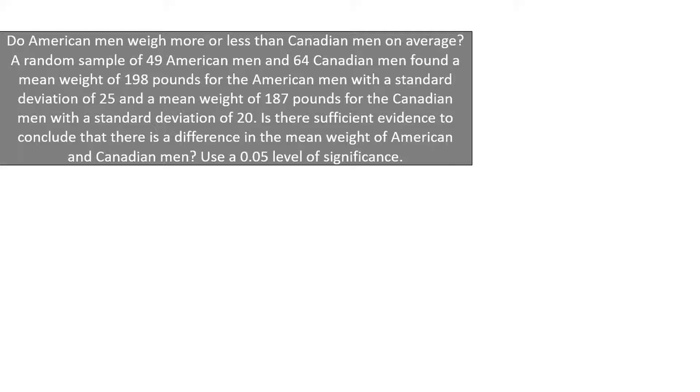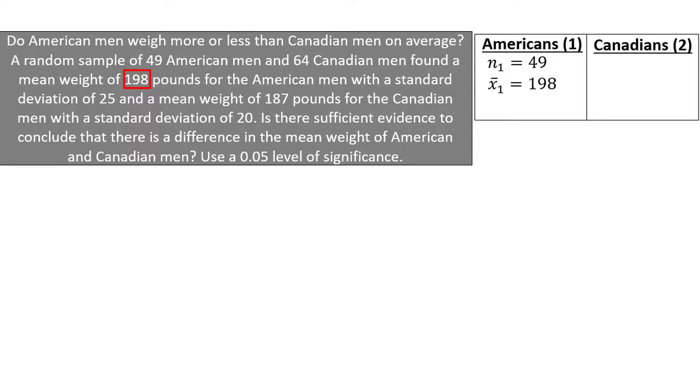Let's begin by listing out some of the given information. We can let sample 1 represent Americans and sample 2 represent Canadians. n1 is the 49 Americans that were sampled. x bar 1 is the sample mean of 198 for Americans, and s1 is the sample standard deviation for Americans, which is 25. n2 is the 64 Canadians that were sampled. x bar 2 is the sample mean of 187 for Canadians, and s2 is the sample standard deviation for Canadians, which is 20.